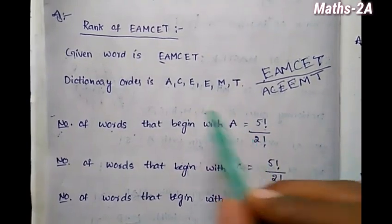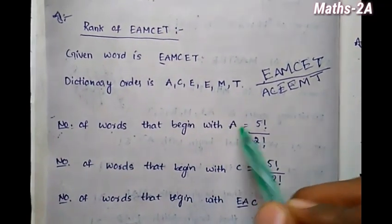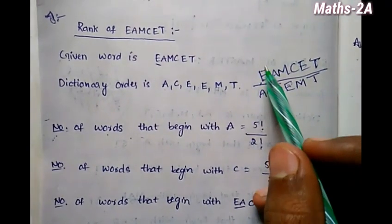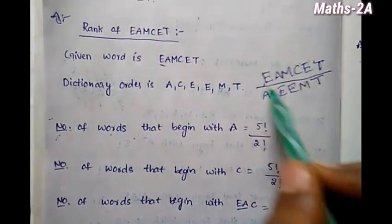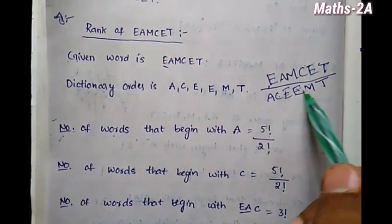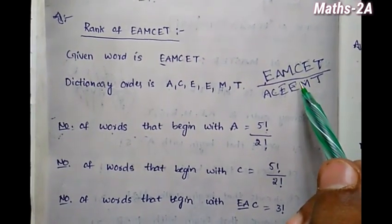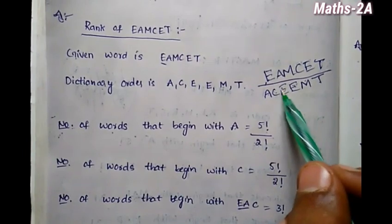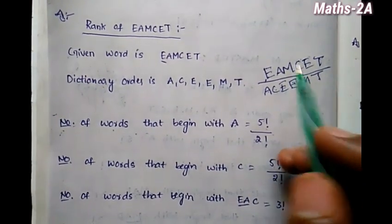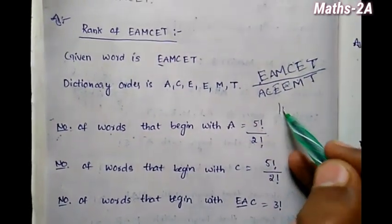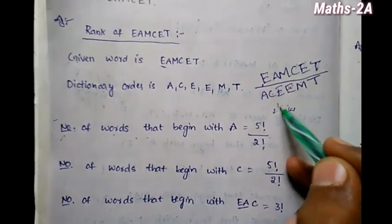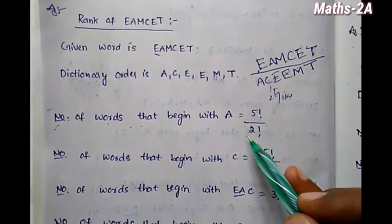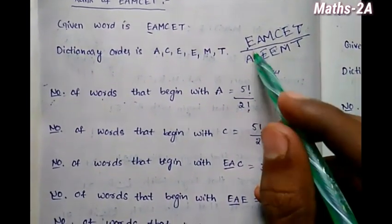We are going to show the number of words that will begin with A. Since A is the first letter in dictionary order, if A is fixed as the first letter, there are five remaining letters. So that is 5 factorial divided by 2 factorial, because two E's are the same. So that gives 60 words beginning with A.